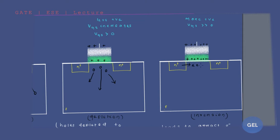In N-plus, the majority carriers are electrons. So electrons from this N-plus region will come out. From this N-plus also, electrons will come out. So at this place, electrons will get accumulated and gathered here. The majority electrons from N-plus and N-plus regions get gathered here — they all come out. A channel will form here due to these electrons.